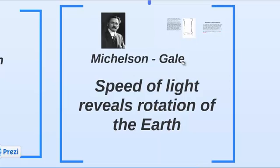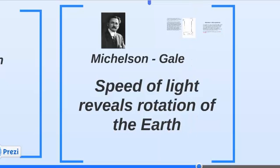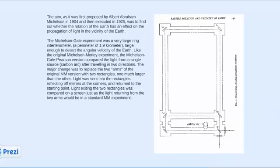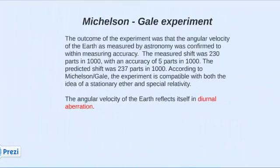Michelson together with Gale performed another version of the experiment, whereby they looked for the speed of light and the rotation speed of the Earth. They had a very large interferometer, and the outcome was that indeed the angular velocity of the Earth could be measured as a variation of the speed of light. This experiment is described as compatible with both the idea of a stationary ether and special relativity. The Michelson-Gale experiment essentially measured the Earth's rotation relative to its inertial reference frame.